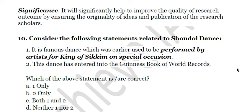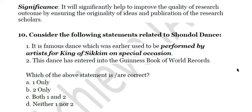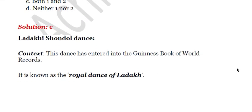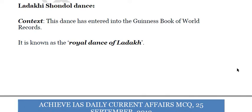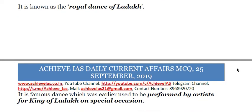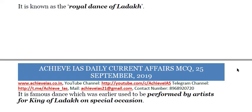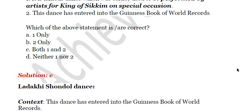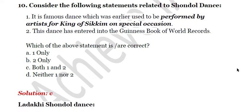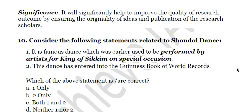Question ten: consider the following statements about the Shondol dance. First, it is a famous dance that was earlier performed by artists for the king on special occasions. Second, this dance has entered the Guinness Book of World Records. Both statements are correct — the answer is C. Also known as the Royal Dance of Ladakh, it was performed by artists for the kings of Ladakh on special occasions and has entered the Guinness Book of Records.